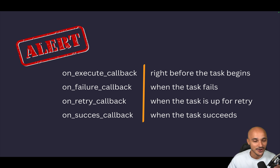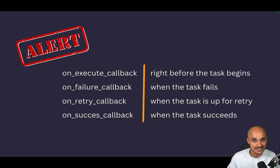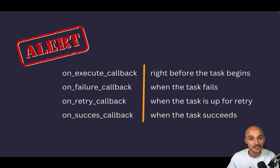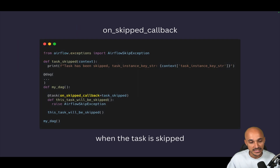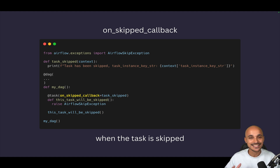What if you want to call a function when a task is skipped? Now you can do it in Airflow 2.9 with the new on_skipped_callback. To use it, put it in the task definition along with the function you want to call. It is as simple as that.